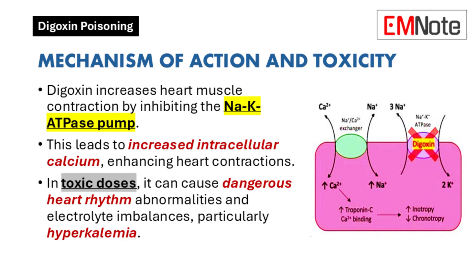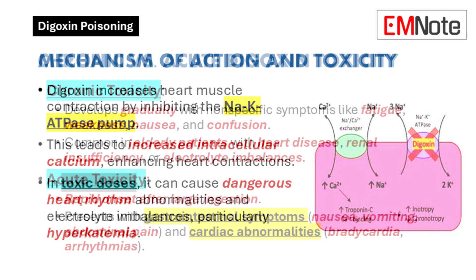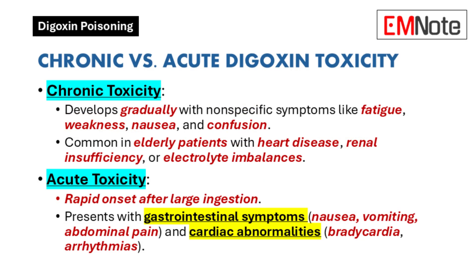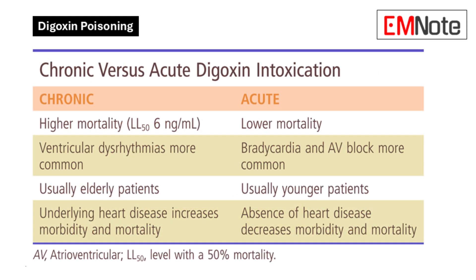There's a difference between chronic and acute toxicity. Chronic digoxin toxicity develops gradually, and the symptoms are often nonspecific — like fatigue, weakness, nausea, and confusion. This is more common in elderly patients, especially those with underlying heart conditions. Renal insufficiency and electrolyte imbalances can make it worse — chronic toxicity is kind of like a slow burn.